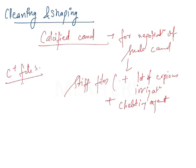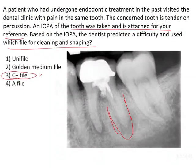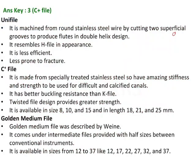C plus files are specially treated stainless steel files with amazing stiffness and strength. They can be used for difficult and calcified canals, and have better buckling resistance than K files. The twisted file design provides greater strength. They are available in sizes 8, 10, and 15, and in lengths 18, 21, and 25 mm. The dentist will be using the C plus file for this patient based on the IOPA.